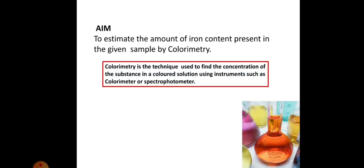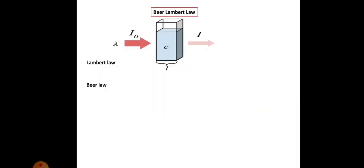Colorimetry is a technique used to find the concentration of a substance in a colored solution using instruments such as a colorimeter or spectrophotometer. These instruments are used to analyze colored solutions. If the solutions are not colored, they can be made colored and then estimated. Such a technique is called colorimetry.